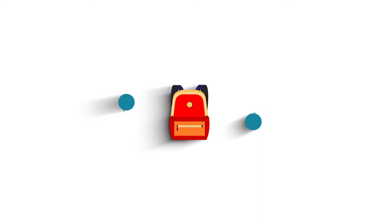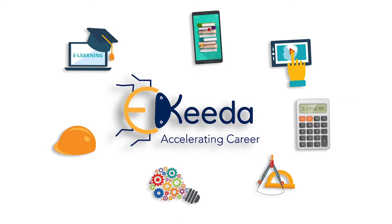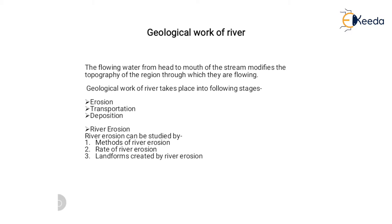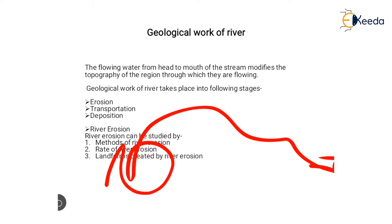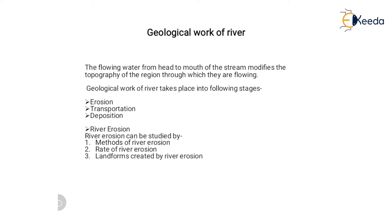Today I am going to be explaining about the geological work of rivers. The flowing water from head to mouth of the stream modifies the topography of the region through which it is moving. Head to mouth means where the river originates and moves until it enters the ocean. Geological work of a river takes place in the following stages: erosion, transportation, and deposition.